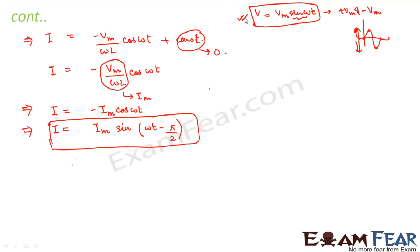The applied voltage was V = Vm sin(ωt) and the current is I = Im sin(ωt − π/2). We see that current and voltage are not in phase — they are out of phase by π/2. We will discuss this phase relationship in detail graphically and with phasor diagrams.